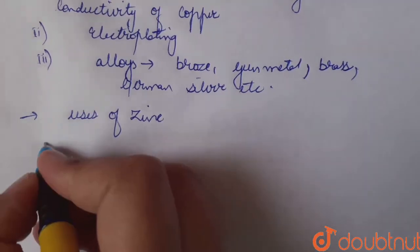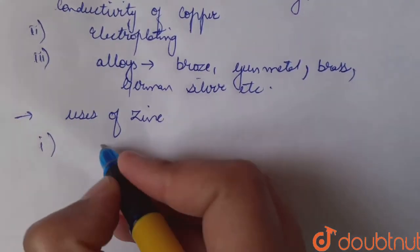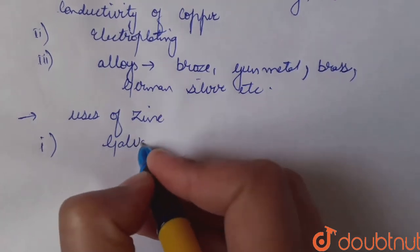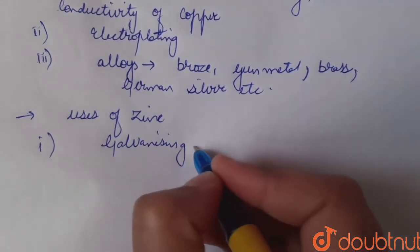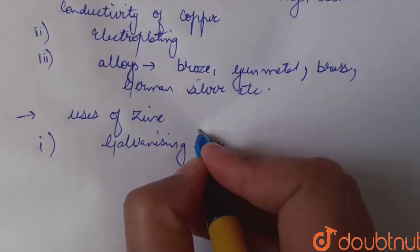Now uses of zinc. Zinc is widely used for galvanizing iron.